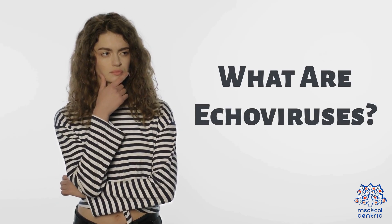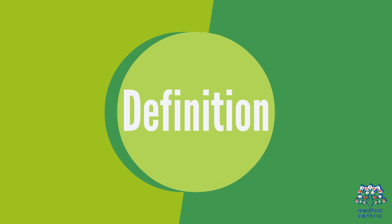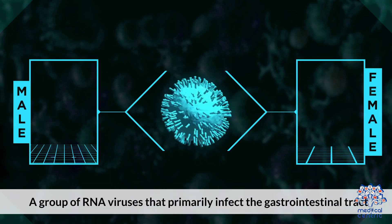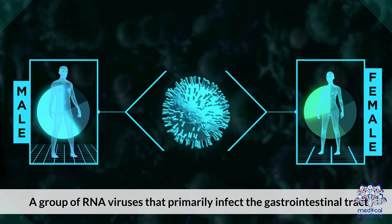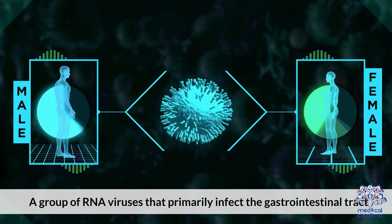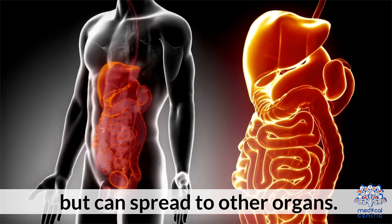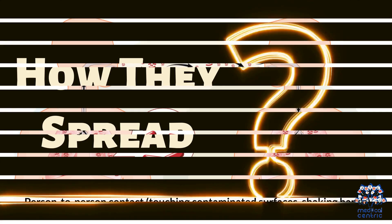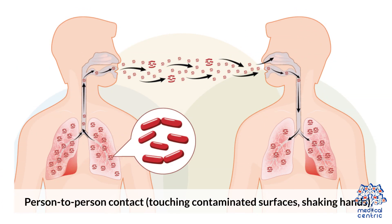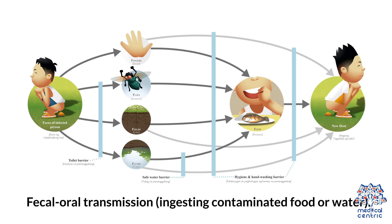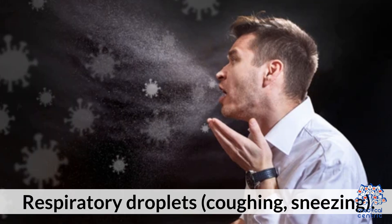What are Echoviruses? Definition: A group of RNA viruses that primarily infect the gastrointestinal tract but can spread to other organs. How they spread: Person-to-person contact, touching contaminated surfaces, shaking hands. Fecal-oral transmission – ingesting contaminated food or water. Respiratory droplets – coughing and sneezing.